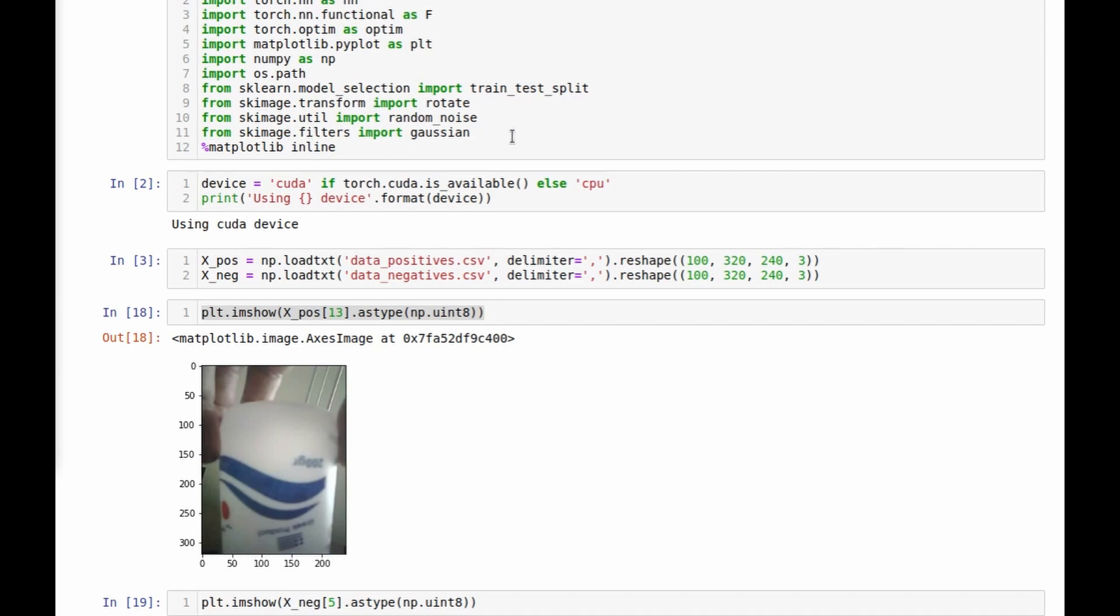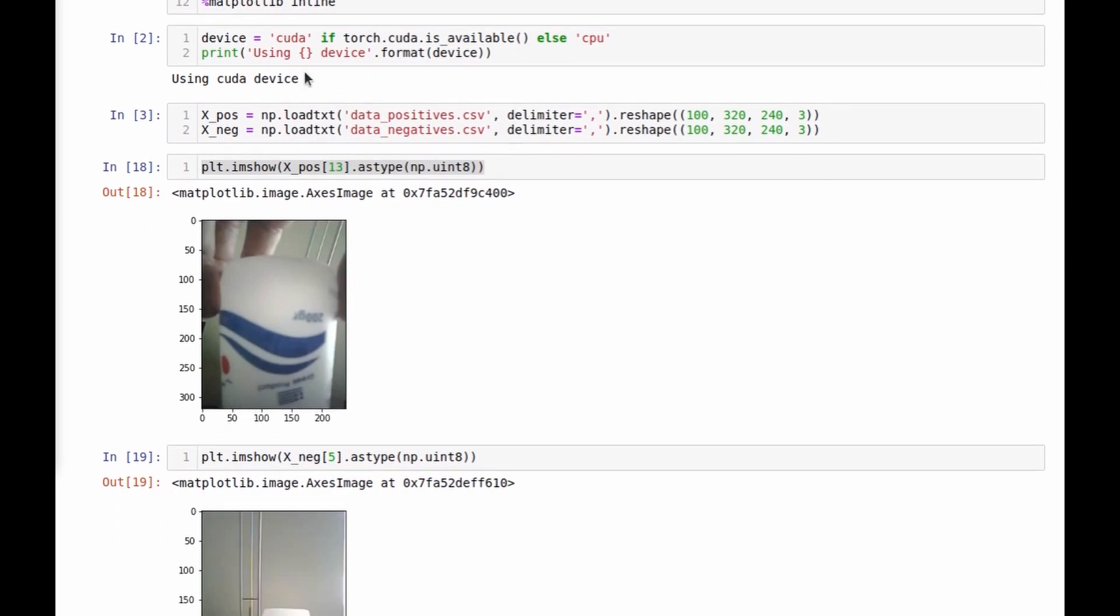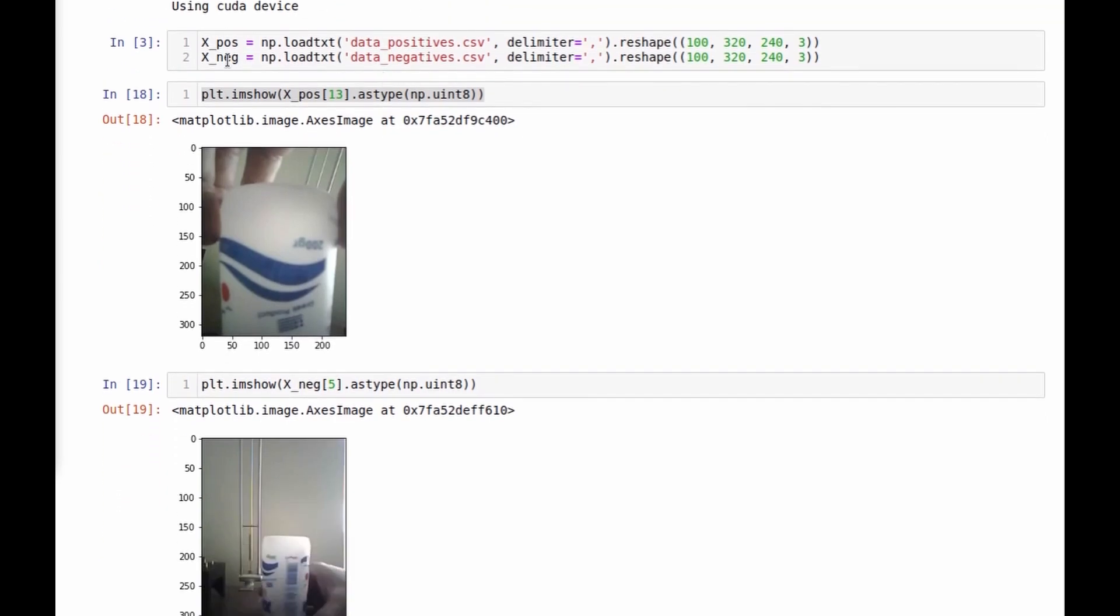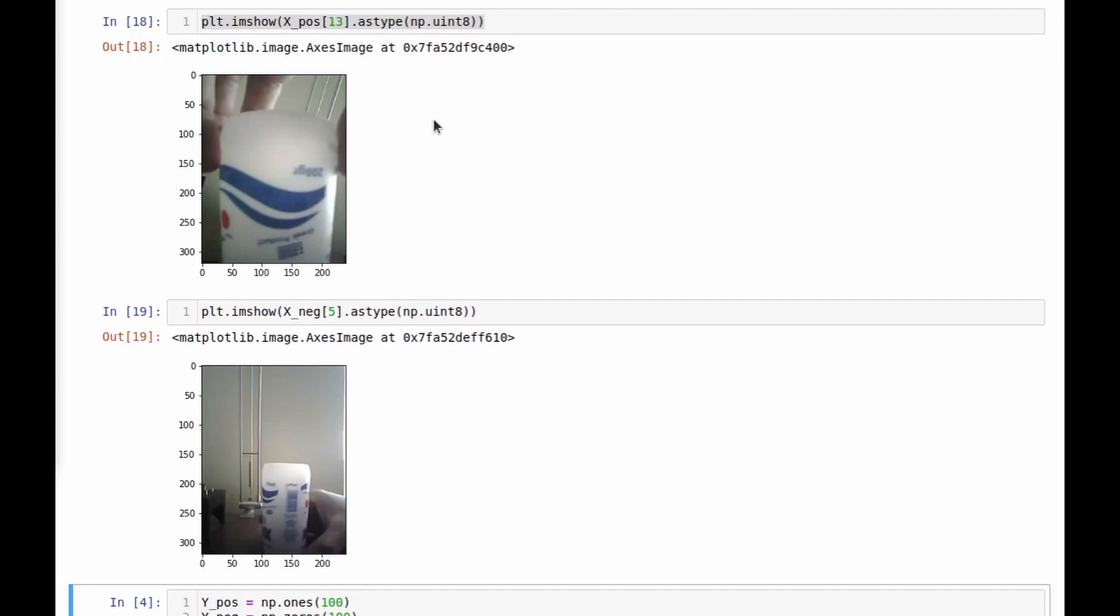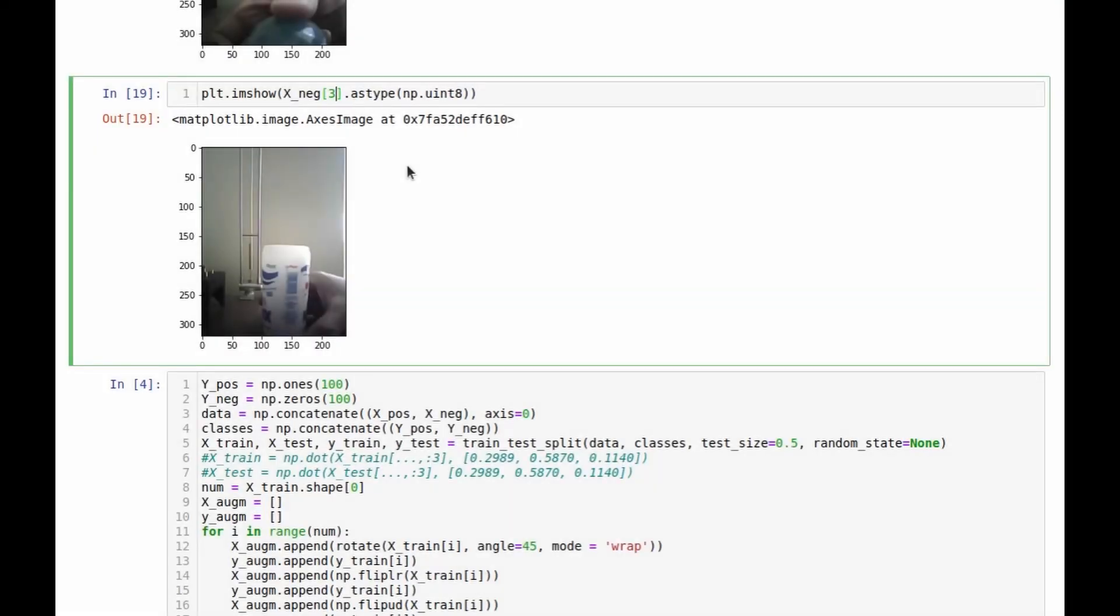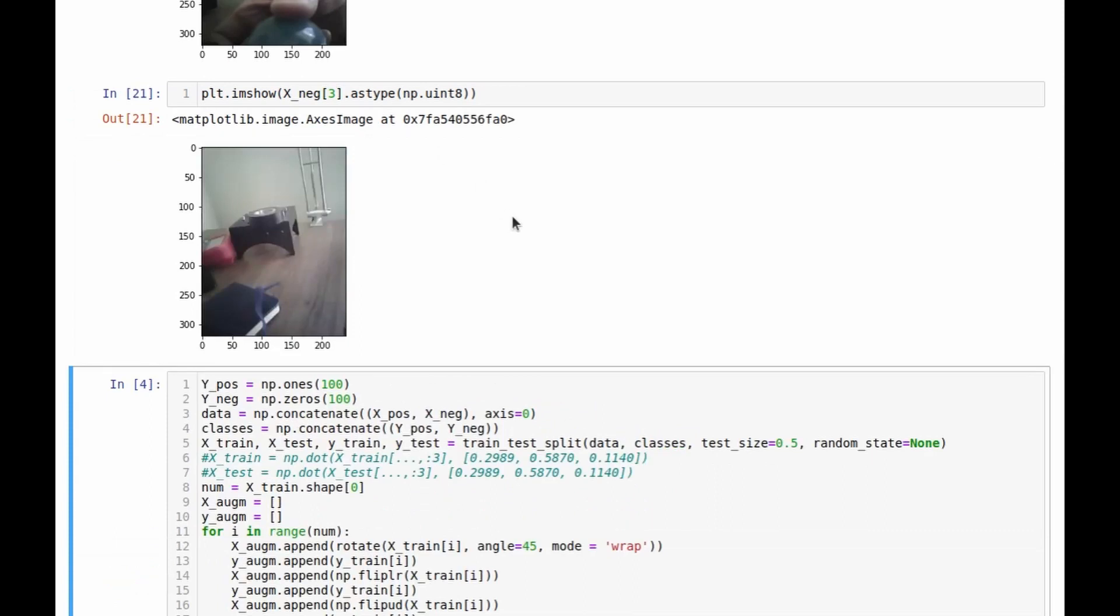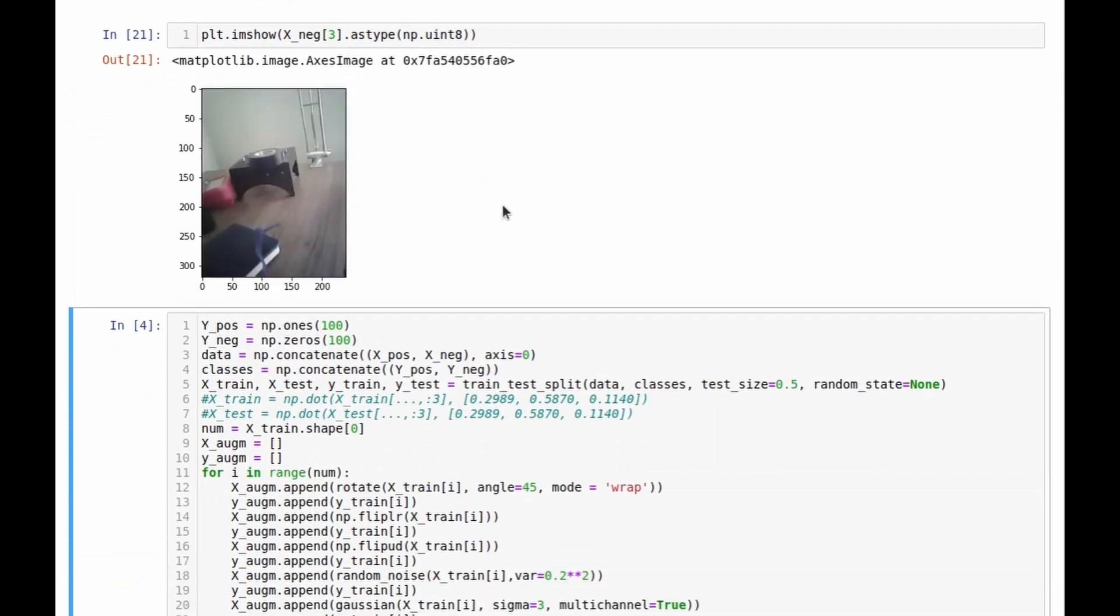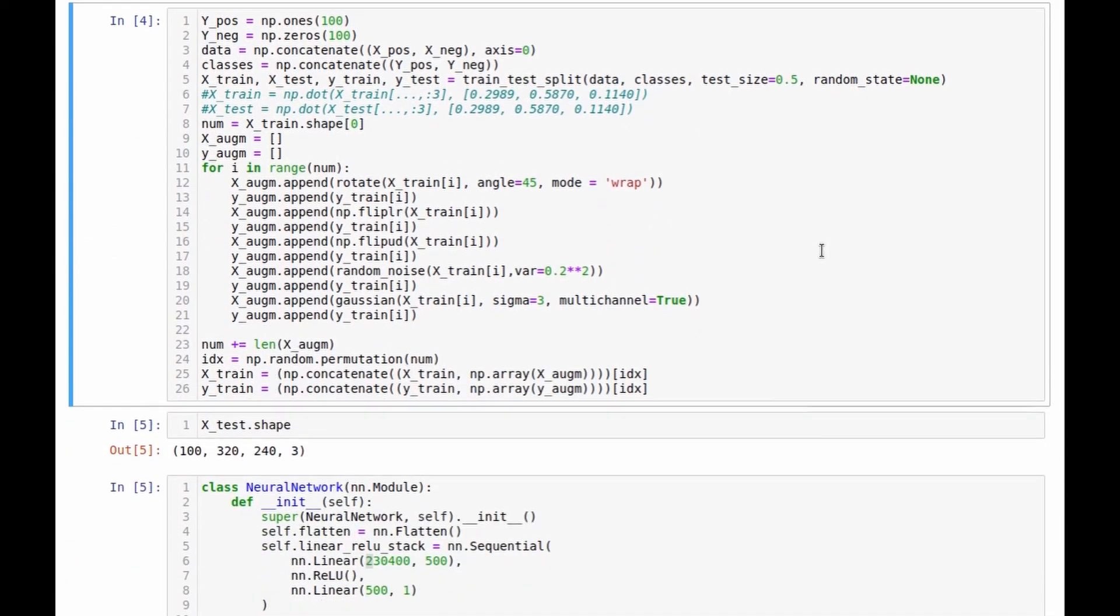This is a notebook with the code. X positive and X negative are the data sets of images which I saved to the disk. These are the examples of positive image and negative image.